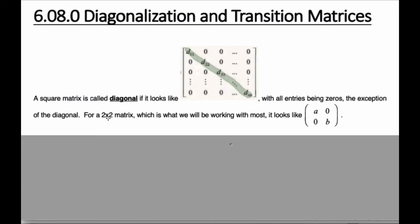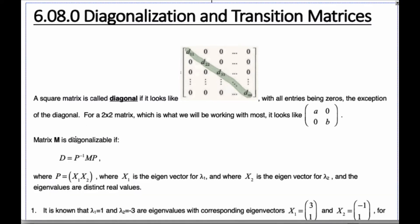We're most concerned, though, in our class, just about a two-by-two matrix. And so it's going to be A and B will have values, and these ones will be zero. And so that's what a diagonal matrix is.